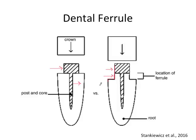According to some clinical research, 1.5 millimeters should be the minimum ferrule length when restoring a root-filled maxillary central incisor with a post and core retained crown. 1.5 millimeters is a pretty widely accepted minimum for all teeth. The 1.5 millimeters of ferrule refers to the aspect of the crown which contacts the natural tooth, which in turn needs to be 1.5 millimeters high — depicted by the bracket shown here.